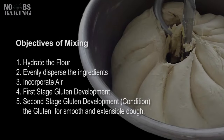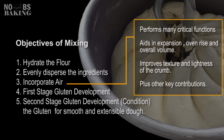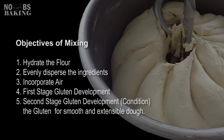The objectives of mixing are as follows: Number one, to hydrate the flour. Number two, evenly disperse the ingredients. Number three, incorporate air — very important. Number four, first stage gluten development. Number five, second stage gluten development. All critical parts, and we'll get to these last two a little later in the video.